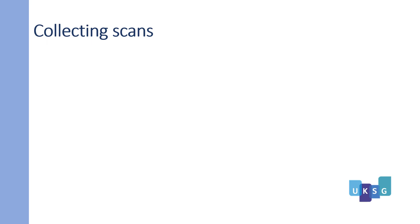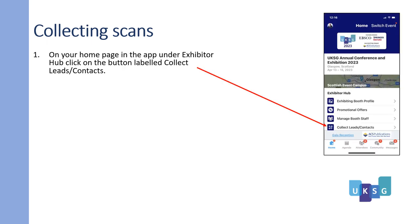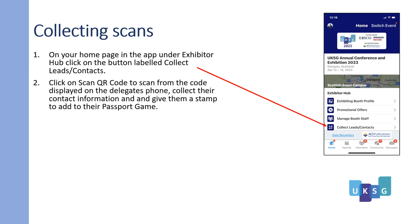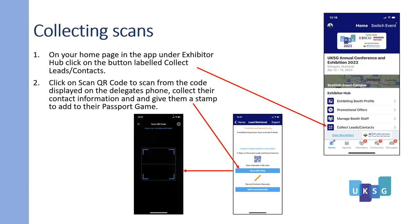How to collect scans. On your home page in the app, under Exhibitor Hub, click on the button labelled Collect Lead/Contacts. Click on Scan QR Code to scan from the code displayed on the delegate's phone. Collect their contact information and give them a stamp to add to the Passport game.